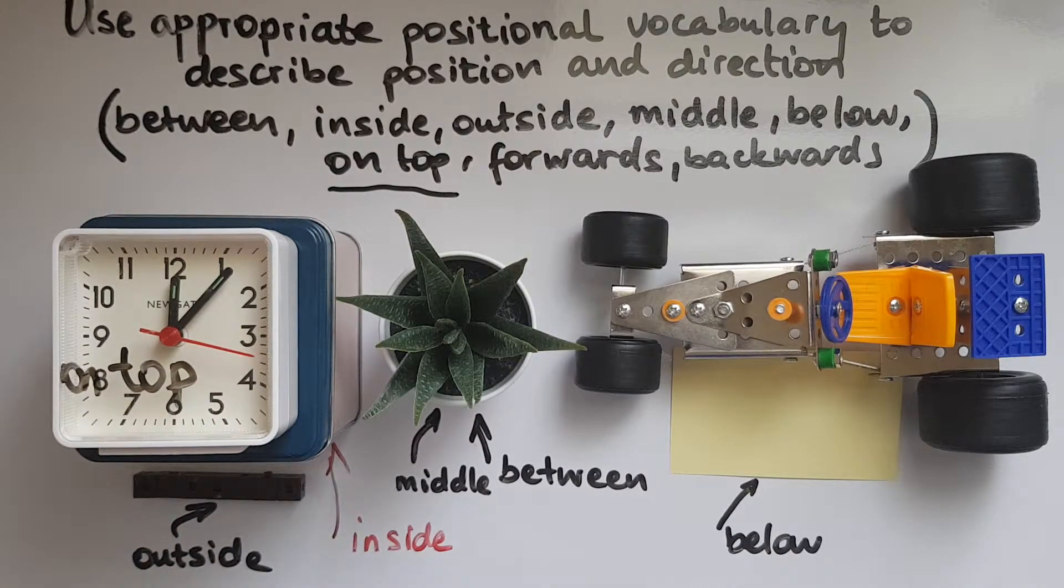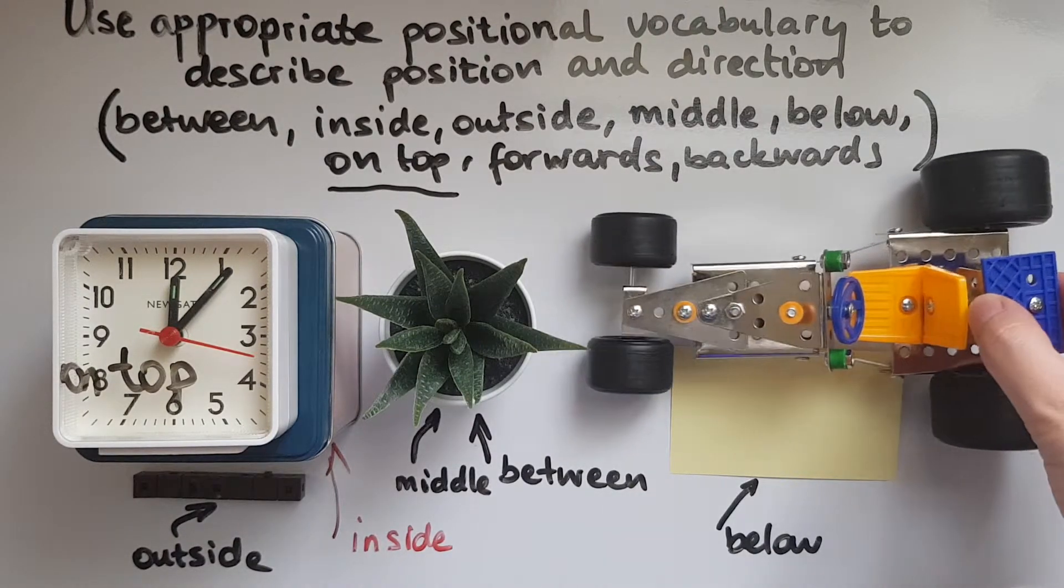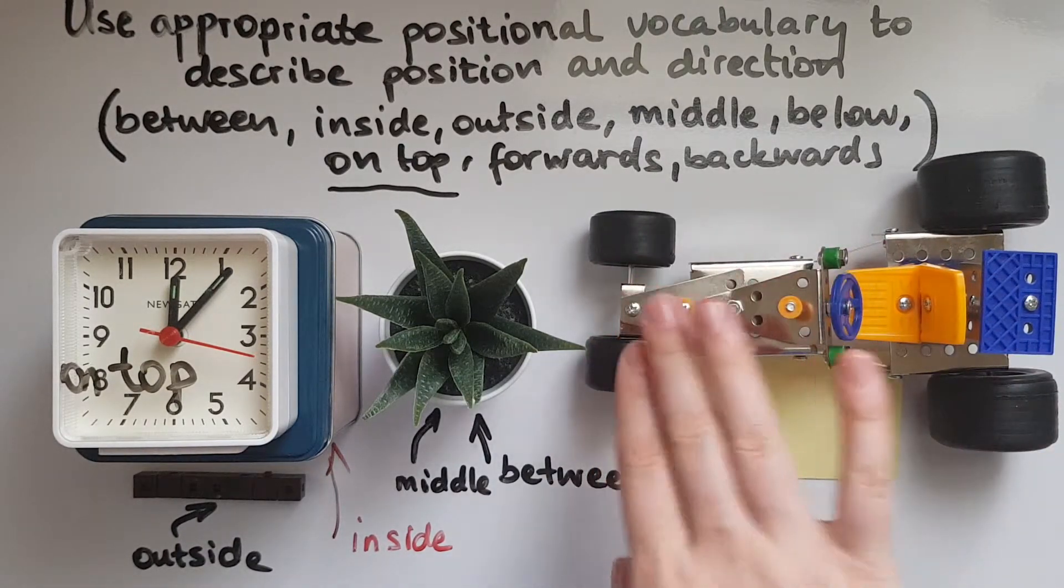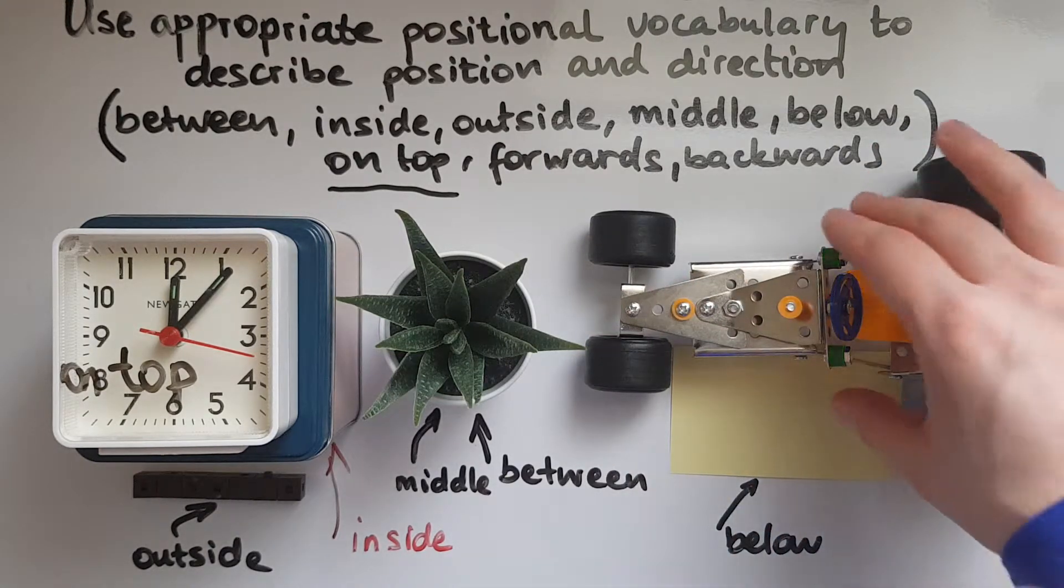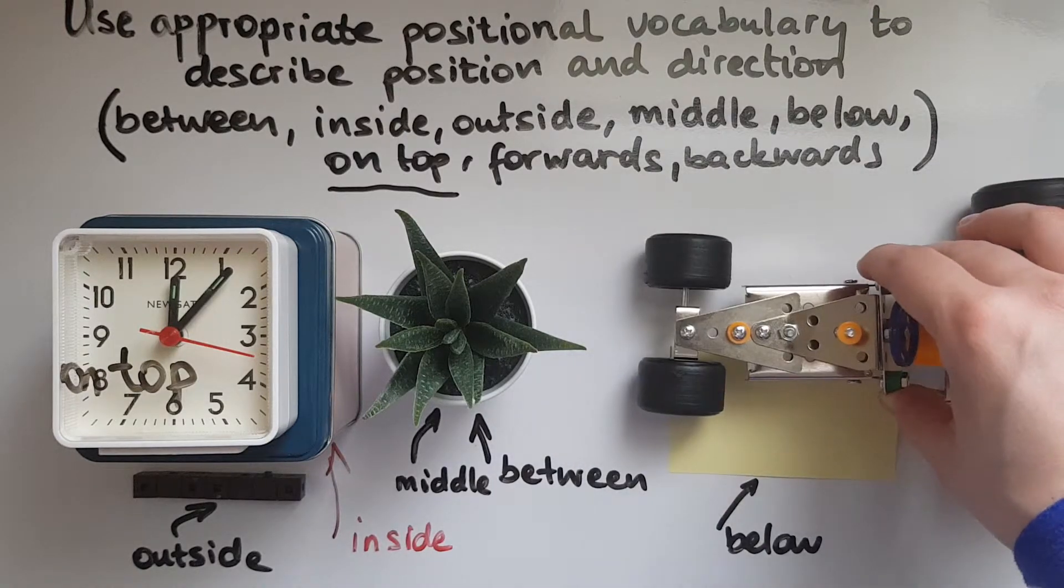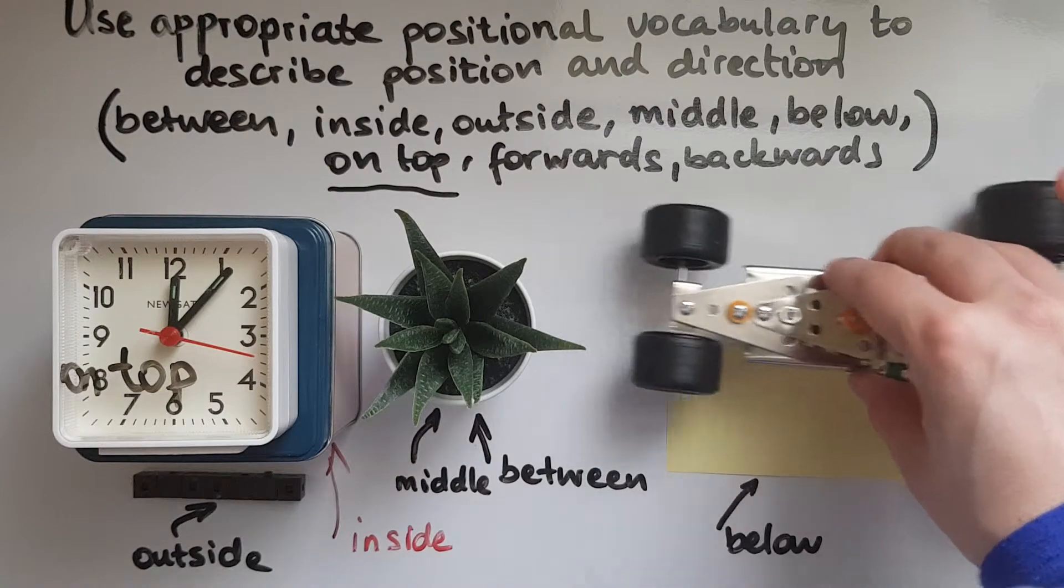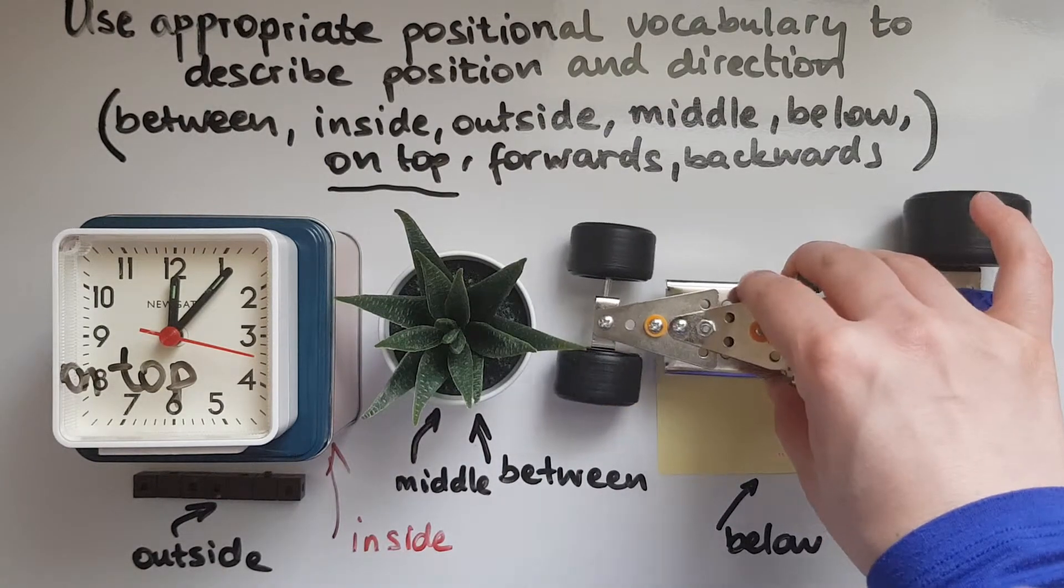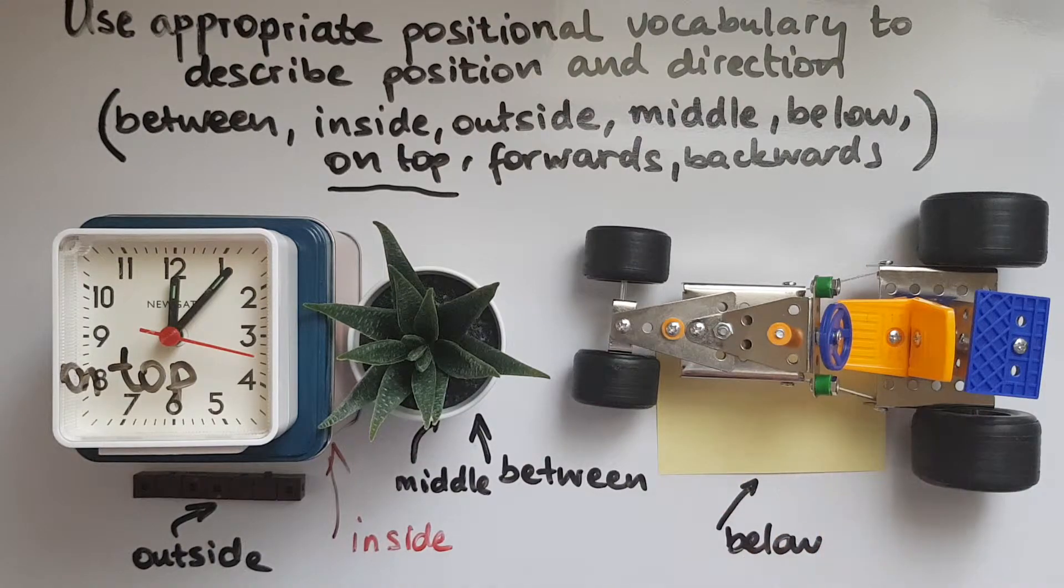Forward and backwards. If you look at this toy car, it's got the front. So this is the front and this is the back. If it's moving in this direction where the front is, this is going forwards. So front forwards.